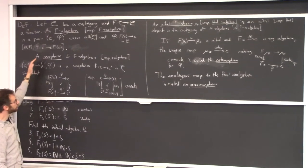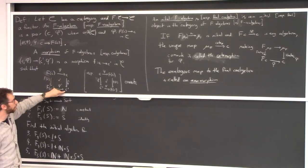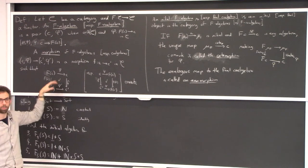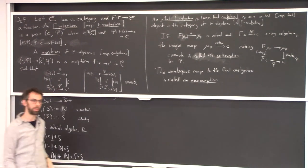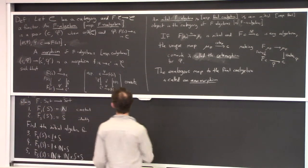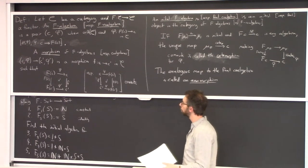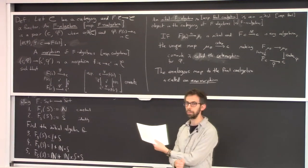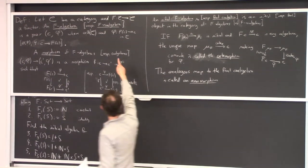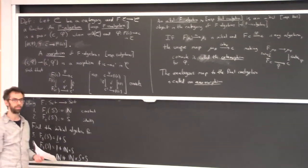A morphism is a map from one carrier to another that commutes with the algebras. What we didn't define last time was co-algebras. A co-algebra is almost exactly the same—it's just that your map, instead of going from F of C to C, goes from C to F of C.